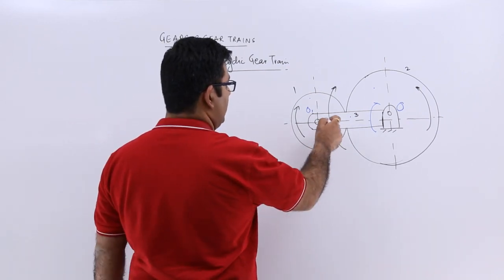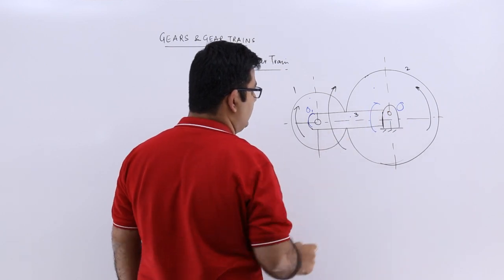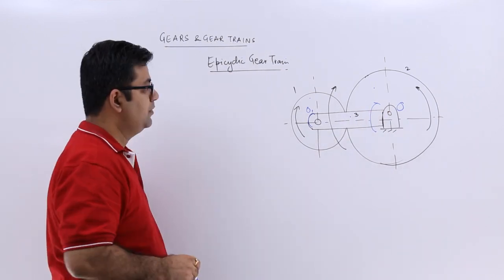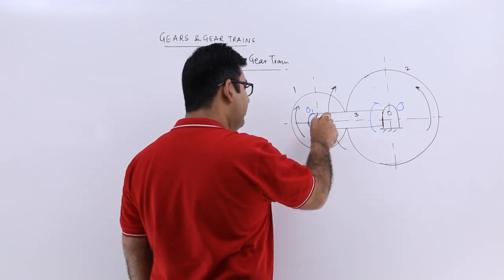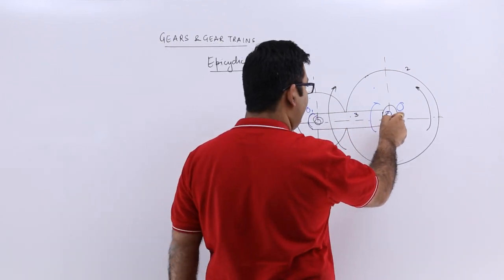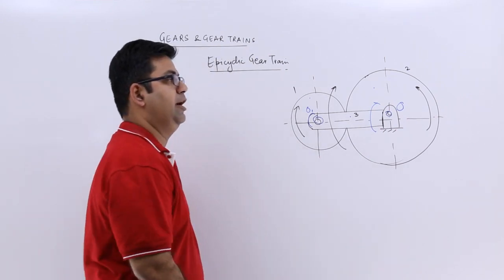if I make this arm stationary, so what will happen? It will become a simple gear train because this center will also become fixed. This is already fixed. So you will just have a simple gear train.